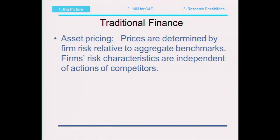In traditional asset pricing, prices are determined by firms' risk relative to aggregate benchmarks. Firms' risk characteristics are typically viewed as independent of the actions of competitors. In corporate finance, we investigate the failure of the Modigliani-Miller proposition — a very famous proposition stating that real and financial decisions are independent, but set up under conditions we don't believe hold in the real world. People investigate the impact of the failure of these conditions, and that's what a lot of people in finance worry about.